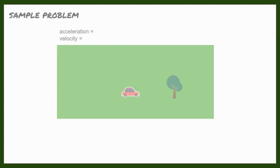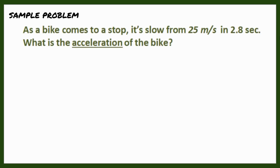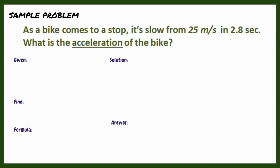Alright, let's try this sample problem. As a bike comes to a stop, it slows from 25 meters per second in 2.8 seconds. What is the acceleration of the bike? What is being asked? That's correct — the acceleration. Based on the problem, the given are: initial velocity = 25 meters per second, final velocity = 0 (when the bike stopped), and time = 2.8 seconds.